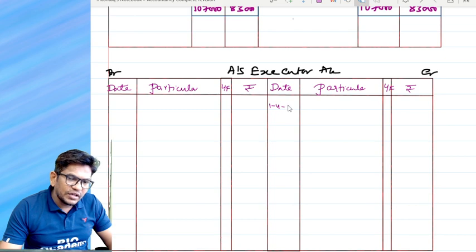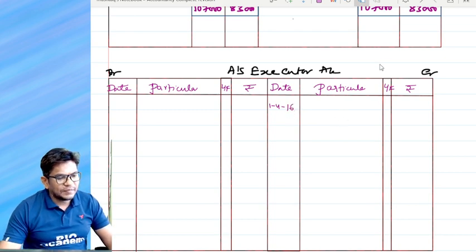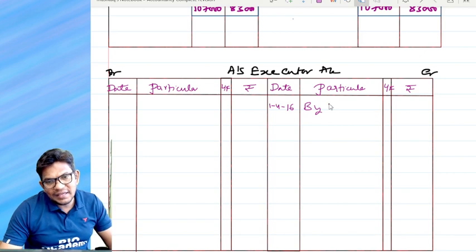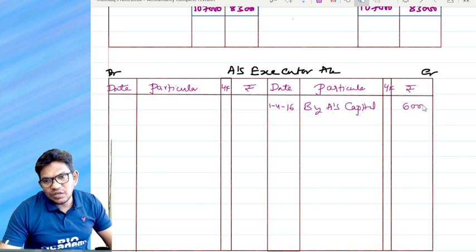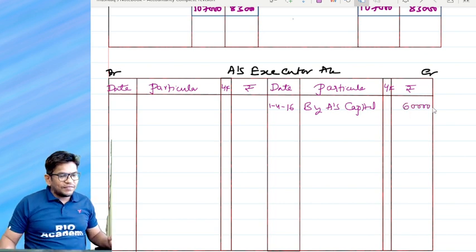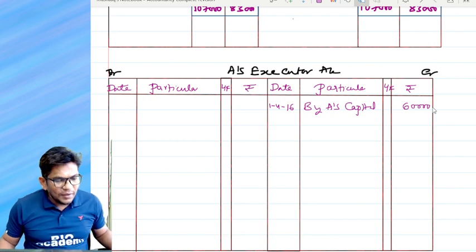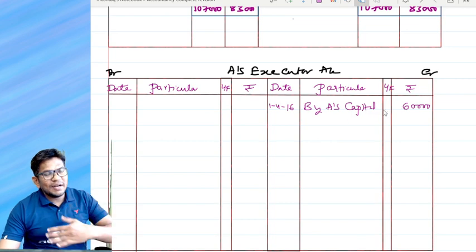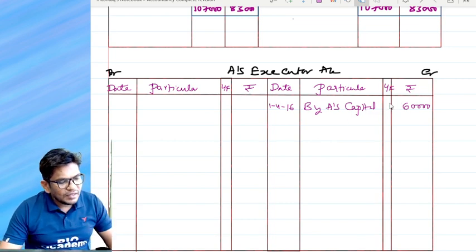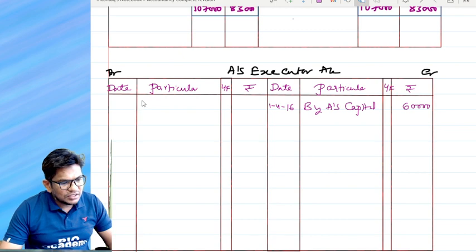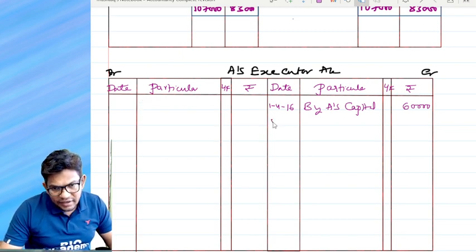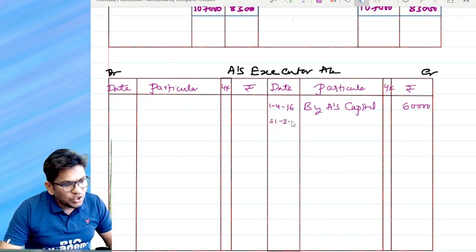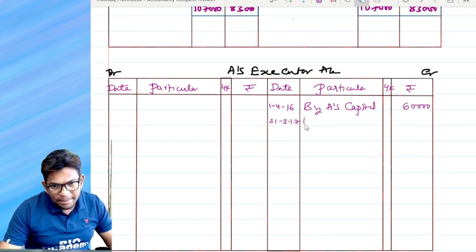By balance, by A's capital account. That is, assume that it is going to be 60,000 because we have to take imaginary figures, right? Assumption is there. The calculation part, you should take the assumed value, whatever you have assumed, on that basis you have to calculate.